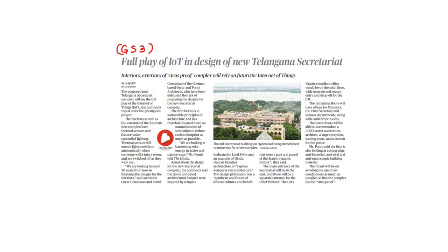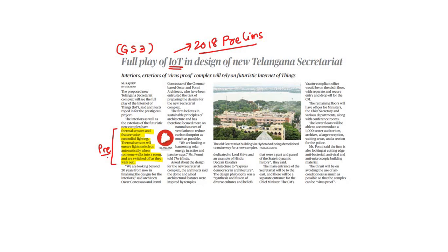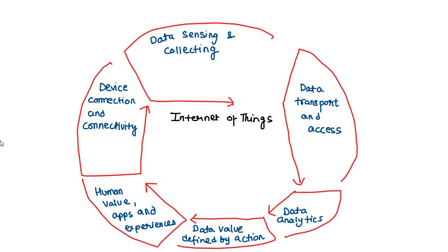The proposed new Telangana Secretariat complex will see the full play of Internet of Things. Interiors and exteriors will have thermal sensors and voice-controlled lighting. Thermal sensors will ensure lights switch on automatically when someone walks into a room and switch off when they walk out. Understanding IoT is very important for prelims. The working of IoT begins with device connection — for example, a remote connected to a television or air conditioner.